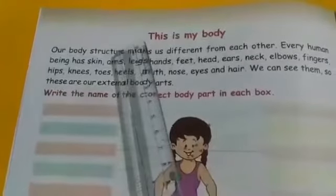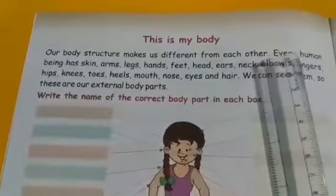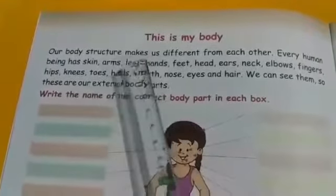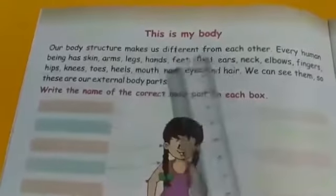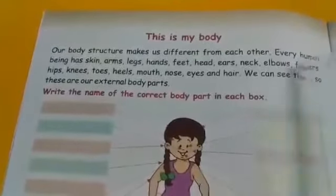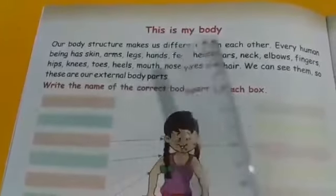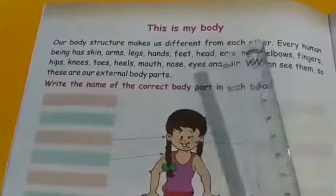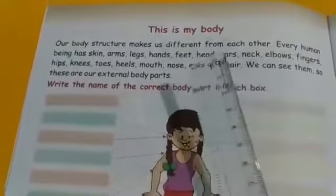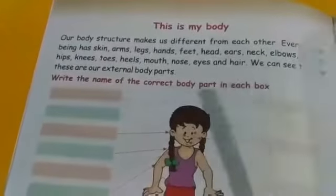Our body structure makes us different from each other. Every human being has skin, arms, legs, hands, feet, head, ears, neck, elbows, fingers, hips, knees, toes, heels, mouth, nose, eyes and hair. These all are our body parts and these all are different from others.